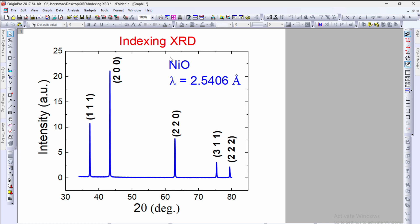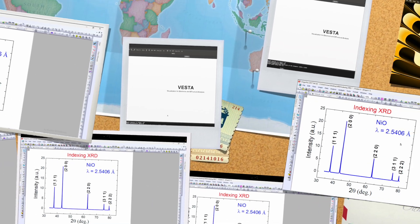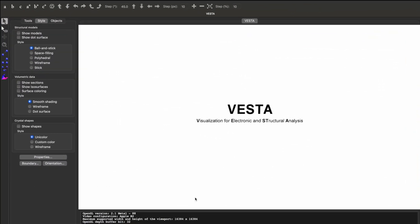In this video we will learn how to index XRD diffractograms. Here is an example of nickel oxide. The data is recorded with copper K-alpha wavelength of 2.5406 angstroms. You can see the peaks are indexed with hkl planes: 111, 200, 220, 311, 222. So how to do that? Let's go to the Vista software.